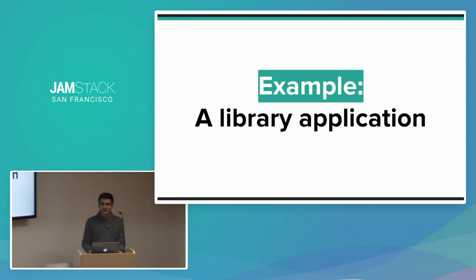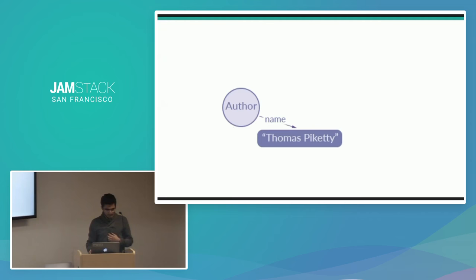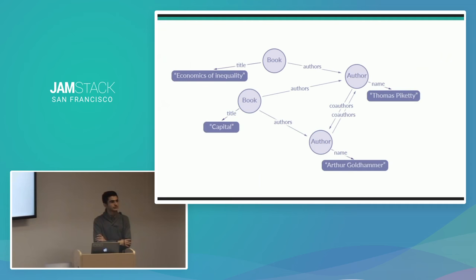Take a simple library application where all we care about are books and authors and their relationships. Authors write books, authors co-author with one another, books have titles, authors have names. A book is a node in our application data graph; its title is another node. Authors have names, forming another set of nodes. Putting this together, an app data graph has a collection of books, a collection of authors, and edges representing relationships between them. Our application operates on this graph — adding nodes or extracting specific things to display to our user.